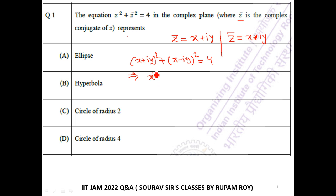x squared plus 2x into iy plus iy squared, plus x minus iy whole squared. Using the square formula: x squared minus 2x into iy plus iy whole squared, that is equal to 4.